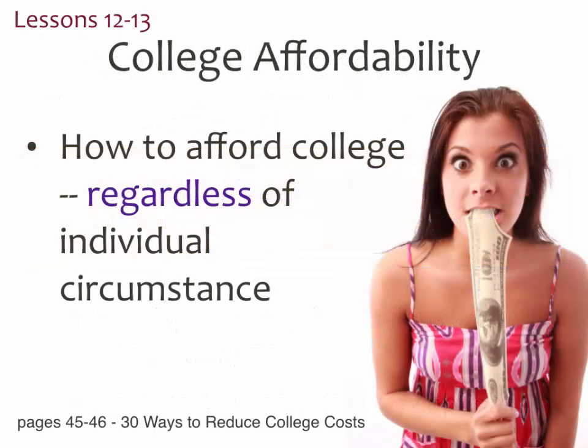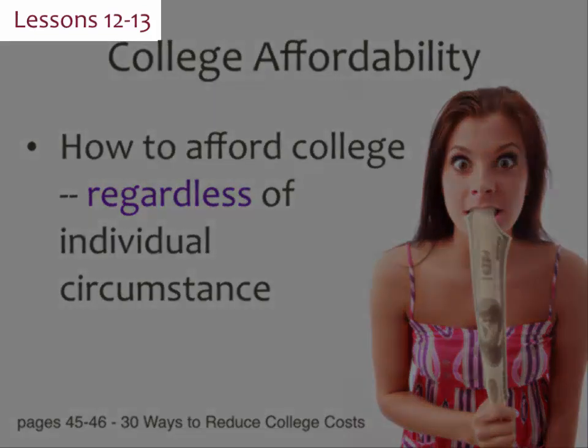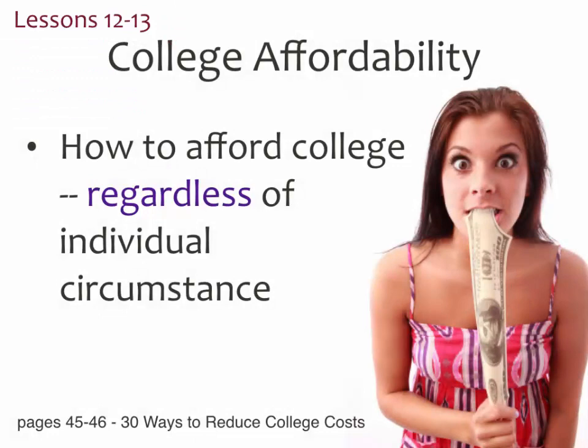Lessons 12 through 13 focus on college affordability, giving students really great ideas — things they can actually do right now to help save themselves money in the future. For example, taking dual enrollment or AP courses, or taking classes at the community college during the summer. We're hoping that when students say they can't afford college, we begin to chip away at that notion and help them see that if they plan ahead and are purposeful, they will be able to afford college.